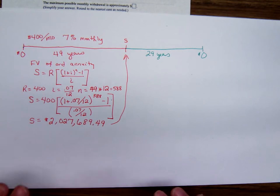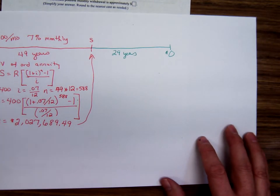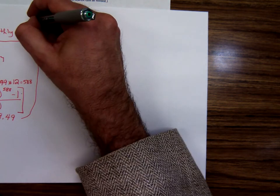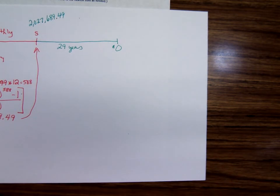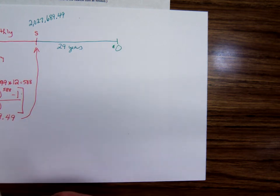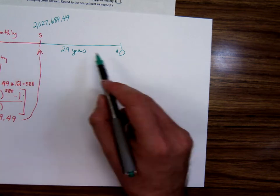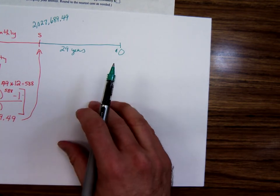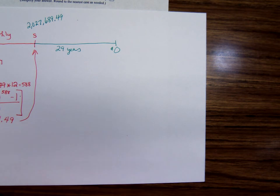So now we're ready to move on into the green timeline. This is when she's retired and living the nice life, taking the money out. What formula will we use now for the green timeline? Right here we have $2,027,689.49. Looking just at this portion of the timeline, is this a present value or a future value problem? Present value. Looking at the green timeline, what's the future value of this account going to be? Zero.